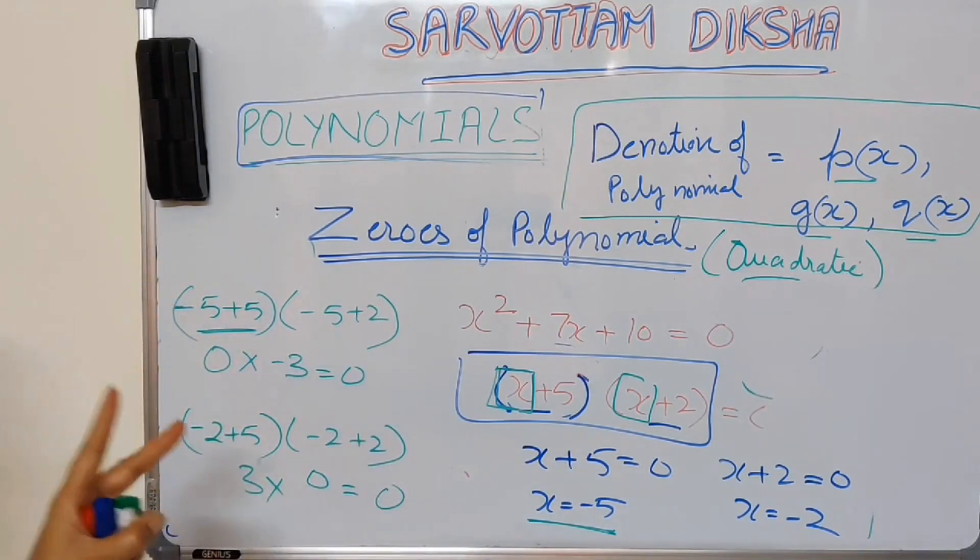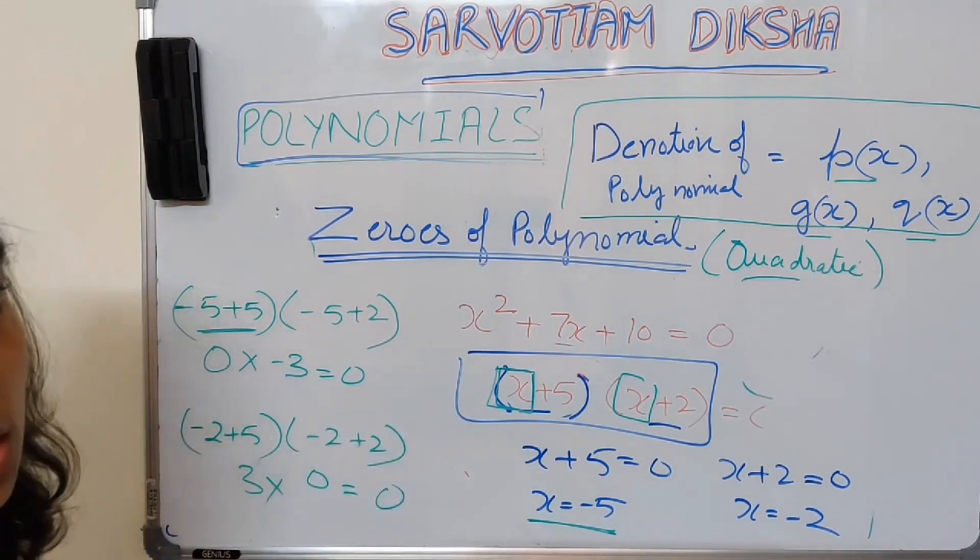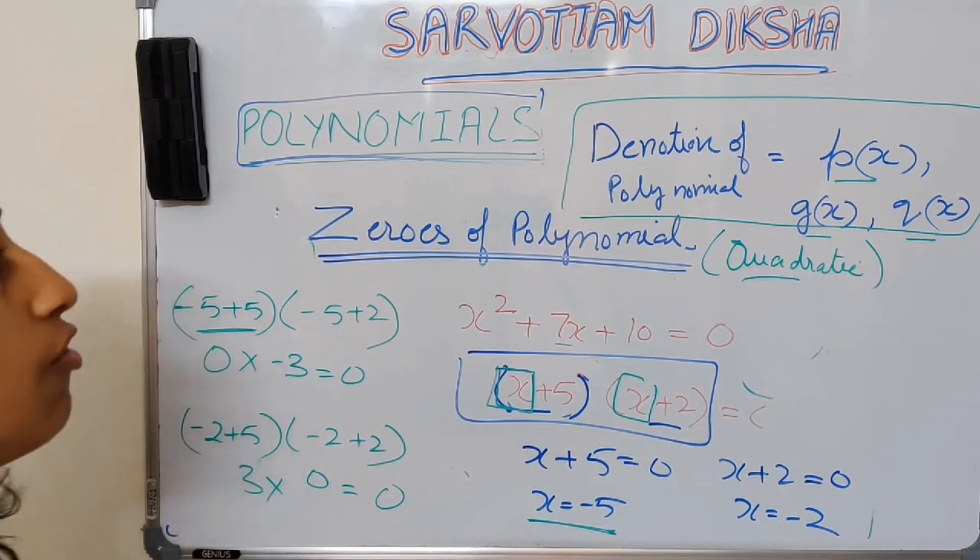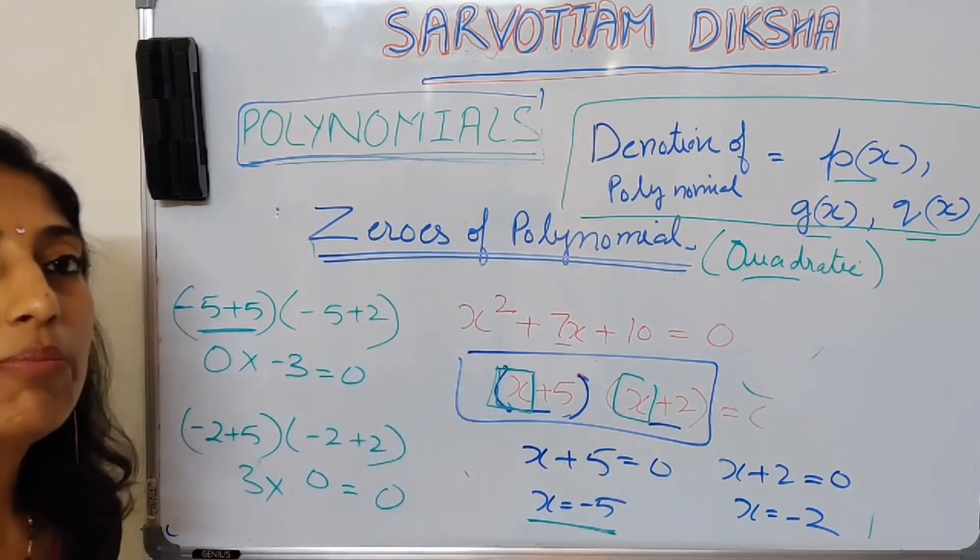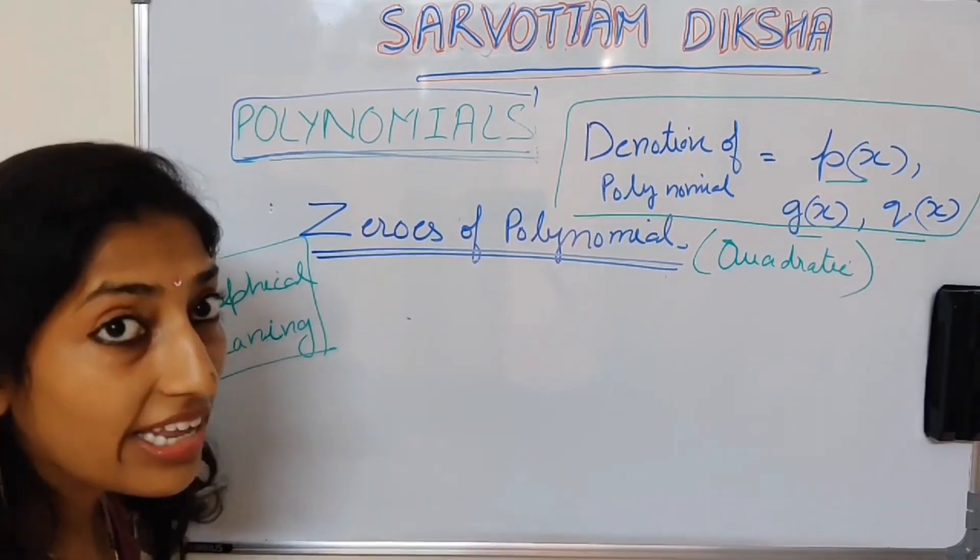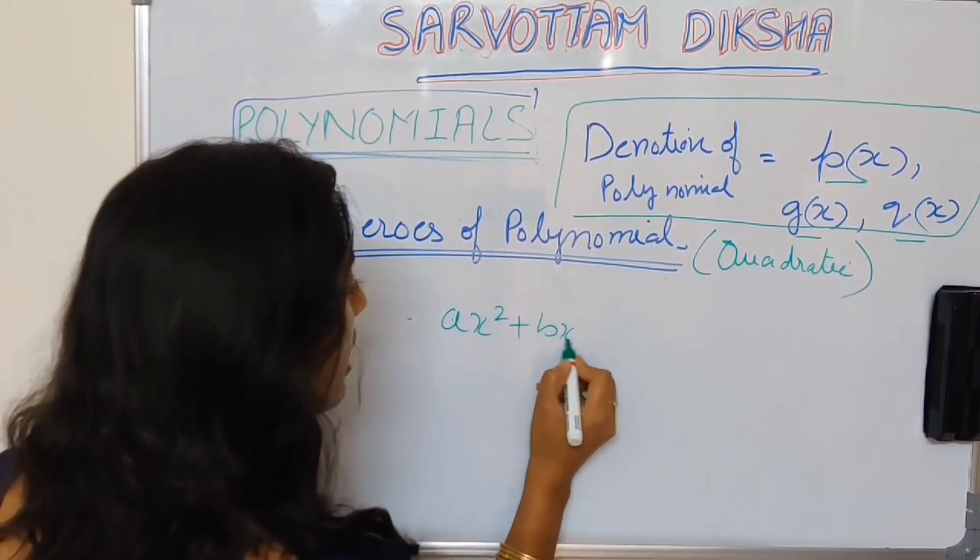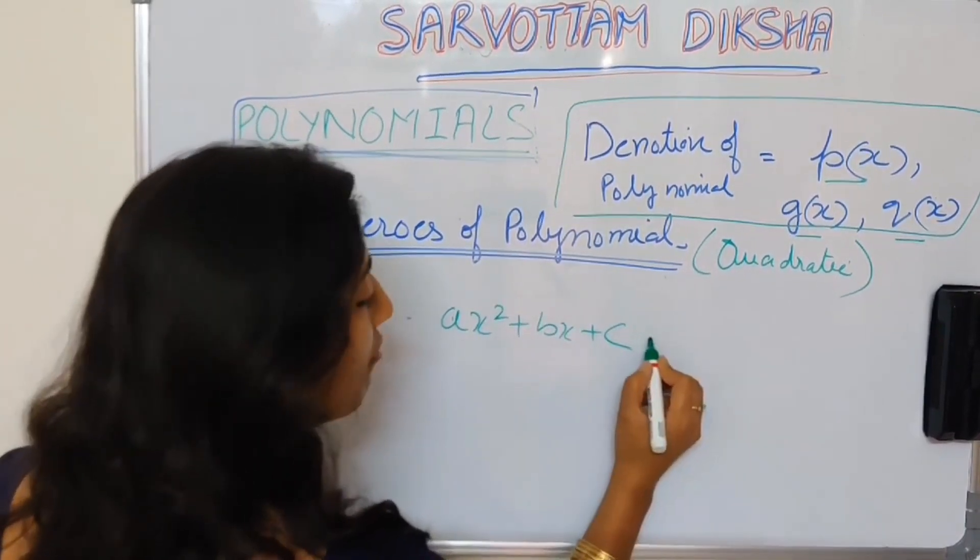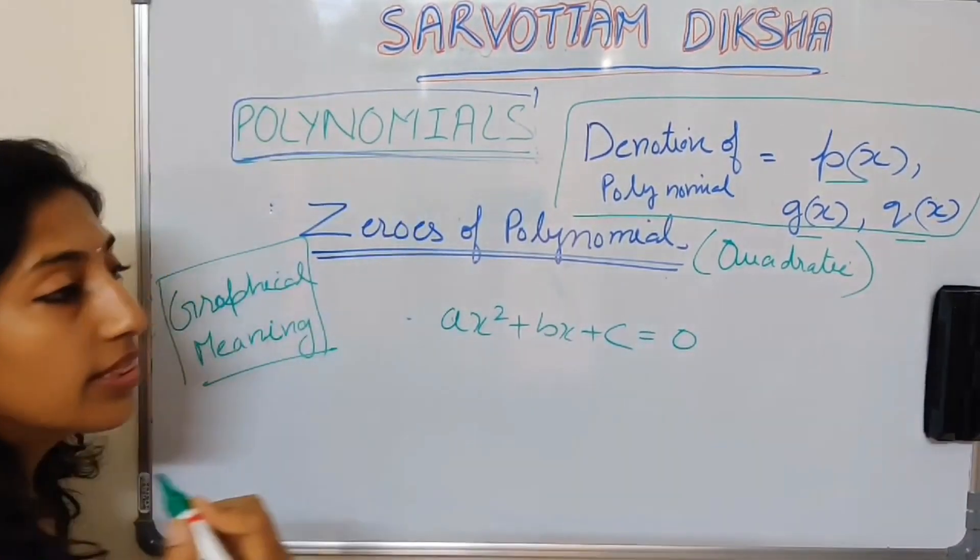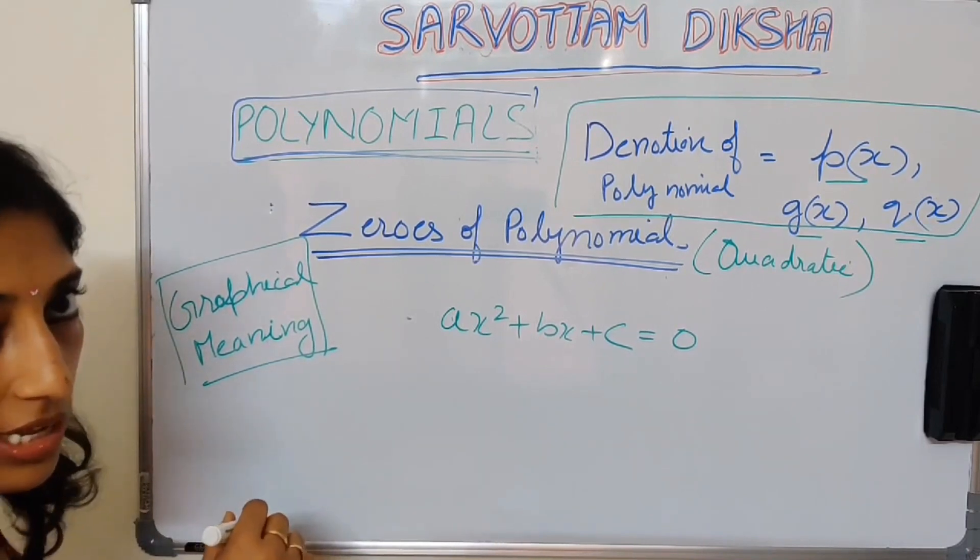So I can make maximum 2 factors for a quadratic polynomial. So maximum 0s which are possible for a quadratic polynomial will be 2 only. For a quadratic expression ax square plus bx plus c, if I want 0s of this quadratic polynomial, there will be always 2 zeros graphically.